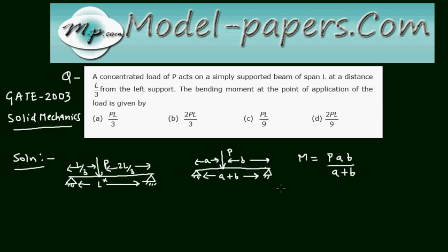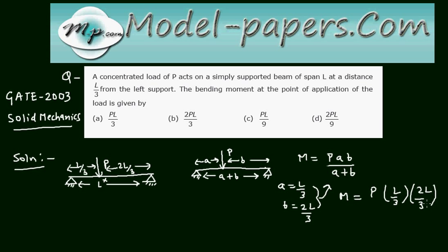For this type of simply supported beam problem, the bending moment is M = Pab/(a+b). In our case a = L/3 and b = 2L/3. Substituting these values: M = P·(L/3)·(2L/3)/L = 2PL/9. Hence option D is correct.